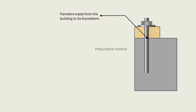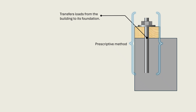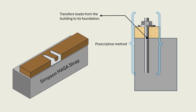Anchor bolts have been the long-standing, prescriptive method for connecting sill plates to foundations in conventional wood-framed residential construction for many generations. They have been specifically referenced in previous and current cycles of the International Residential Code and are widely known by builders. However, anchor bolts are not the only connectors for this task. Embedded anchor straps and other proprietary embedded connectors are gaining popularity and have been referenced in recent cycles of the International Residential Code.